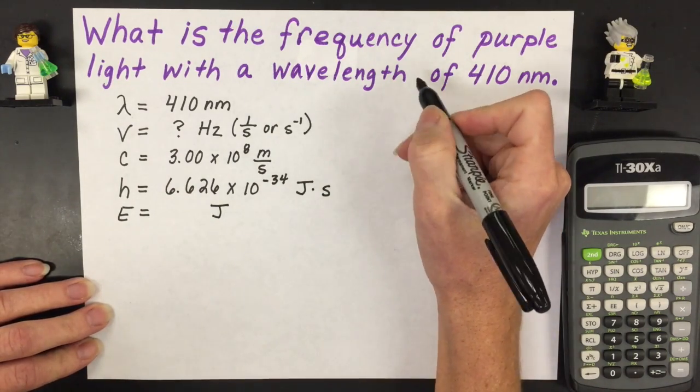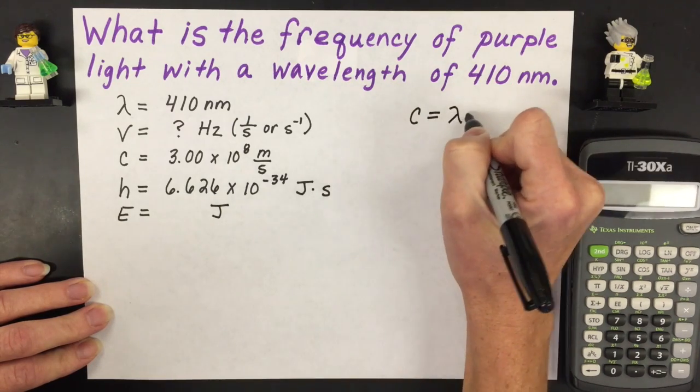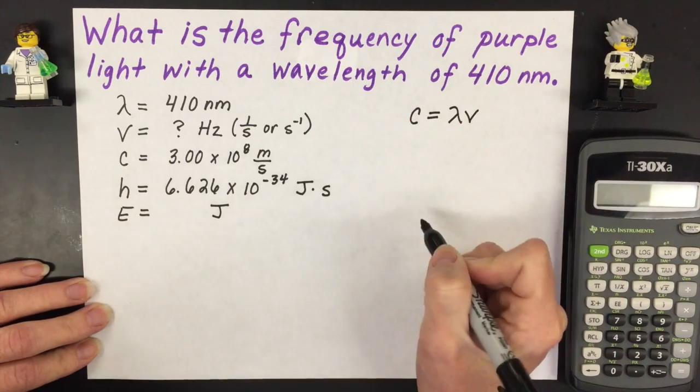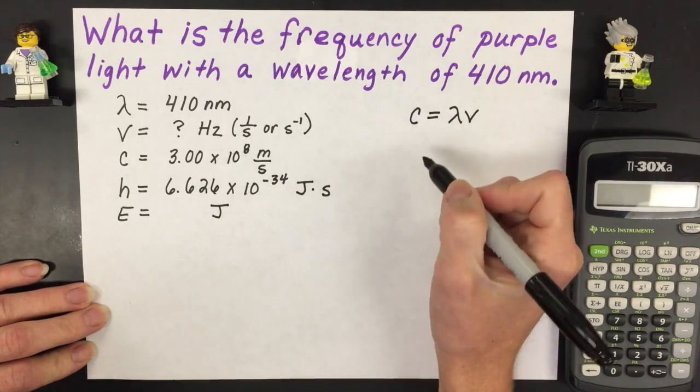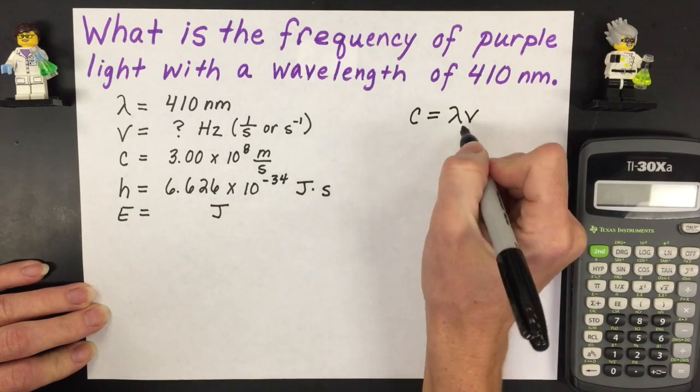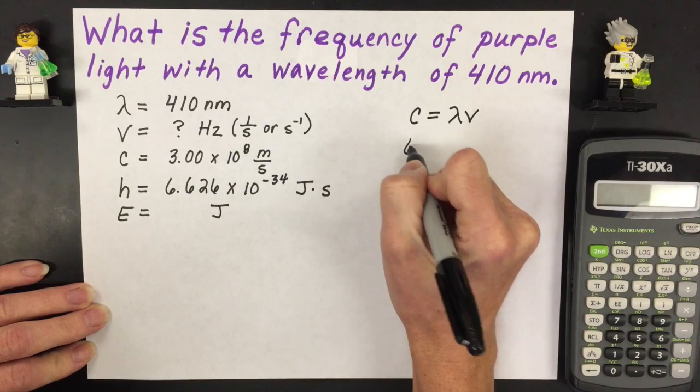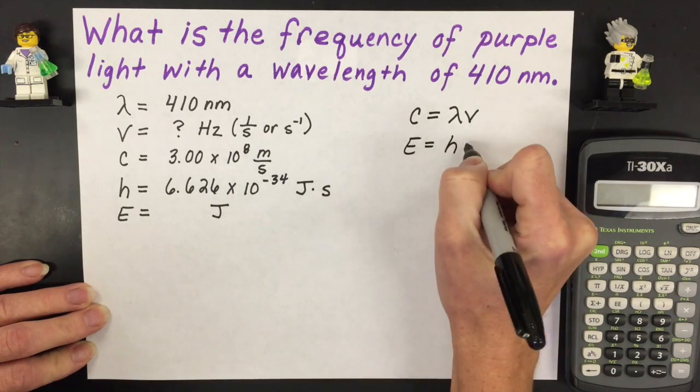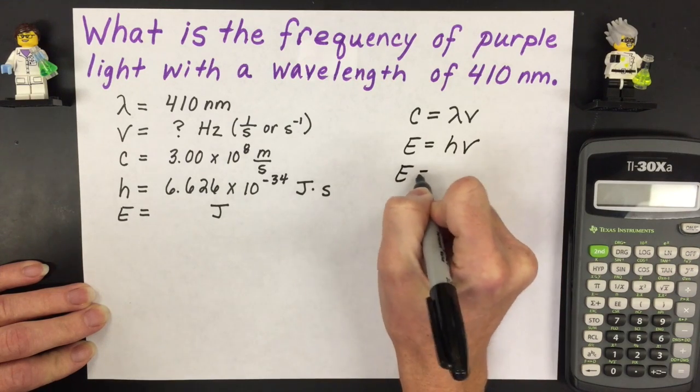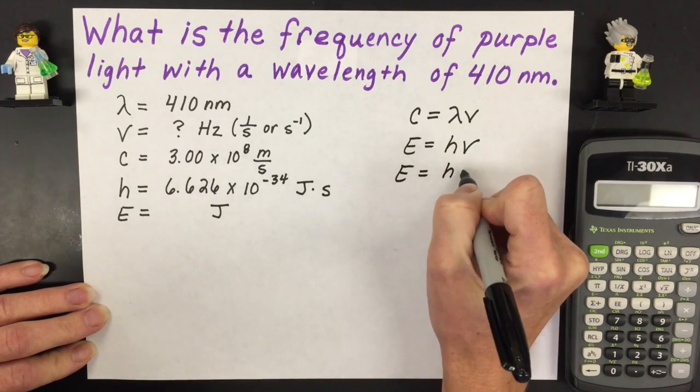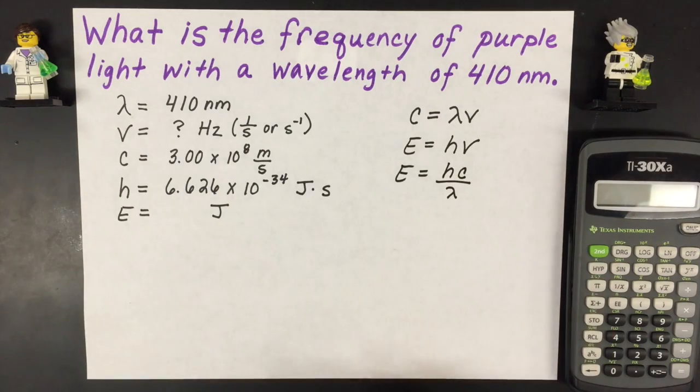Over here what I'm going to do is write down your equations that you can use to solve for wavelength, frequency, and speed of light and energy for any type of electromagnetic radiation moving at the speed of light. So we've got speed of light equals lambda times nu which is wavelength and frequency. You've got another one where energy is equal to Planck's constant times frequency and the last one is putting those two equations together which is Planck's constant times the speed of light divided by wavelength or lambda.